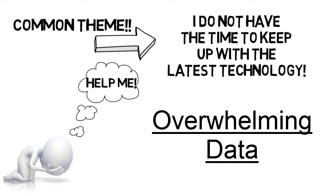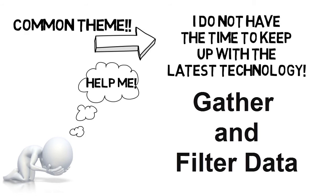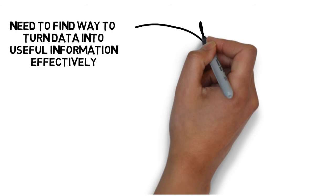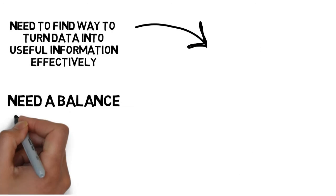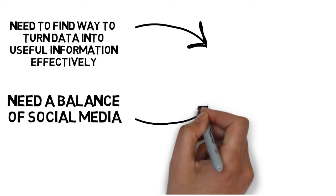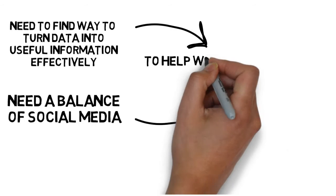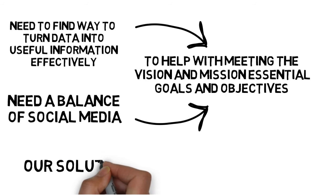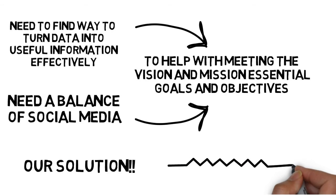It stems from the problem that as organizations continue to strive for maximum productivity with fewer and fewer resources, a strategy that incorporates at least some elements of social media must take center stage. Because of the overwhelming volume of information, it is critical that we find ways to gather, filter, and turn data into usable information to help balance social media, thereby improving the use of priorities to meet the vision and mission essential goals and objectives in the organization. We found our solution by utilizing a host of productivity tools in the social media environment.